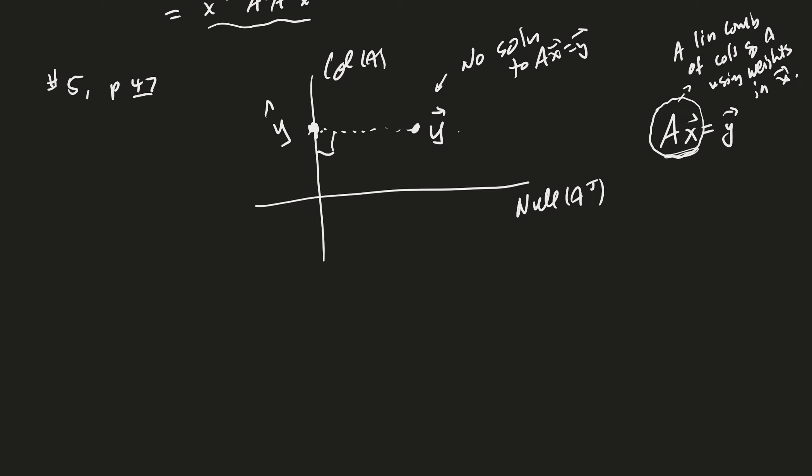and so that's going to be Y hat. And so, the question is, is what matrix, is there a matrix P, such that P times Y is equal to Y hat. So, that would be our projection matrix, and that would be the projection of Y into the column space of A.